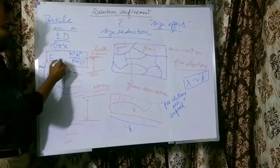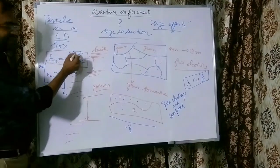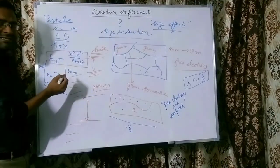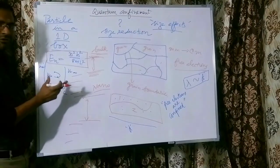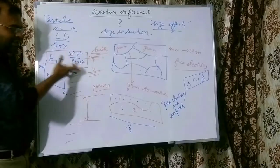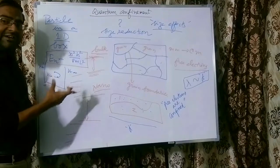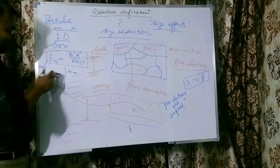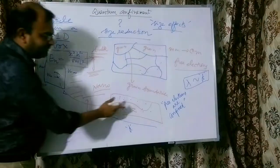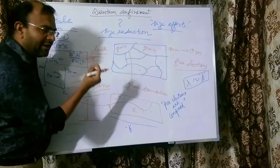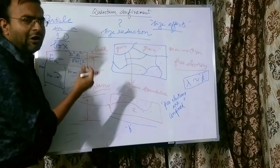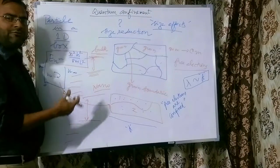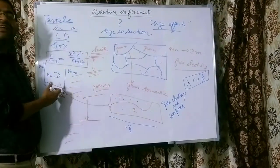Please look out for that video on particle in a one-dimensional box in my channel. Here we can clearly see that n is the quantum number, h is Planck's constant, m is the mass of the particle confined within this one-dimensional box, and L is the length or dimension of the box. This relation is still valid for even a three-dimensional box. Therefore, our grain that is confining the electron is something like a box. Similarly, in a nanomaterial, the electron is confined to a smaller and smaller space or volume, like it is being confined in a box — one-dimensional or three-dimensional, depending on the nanostructure.